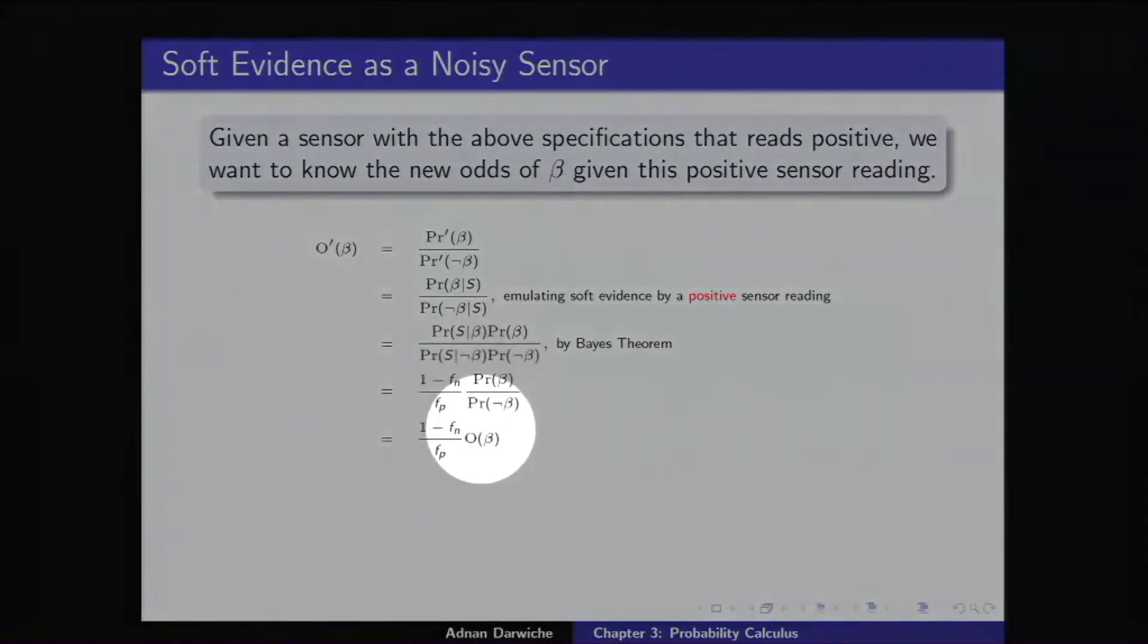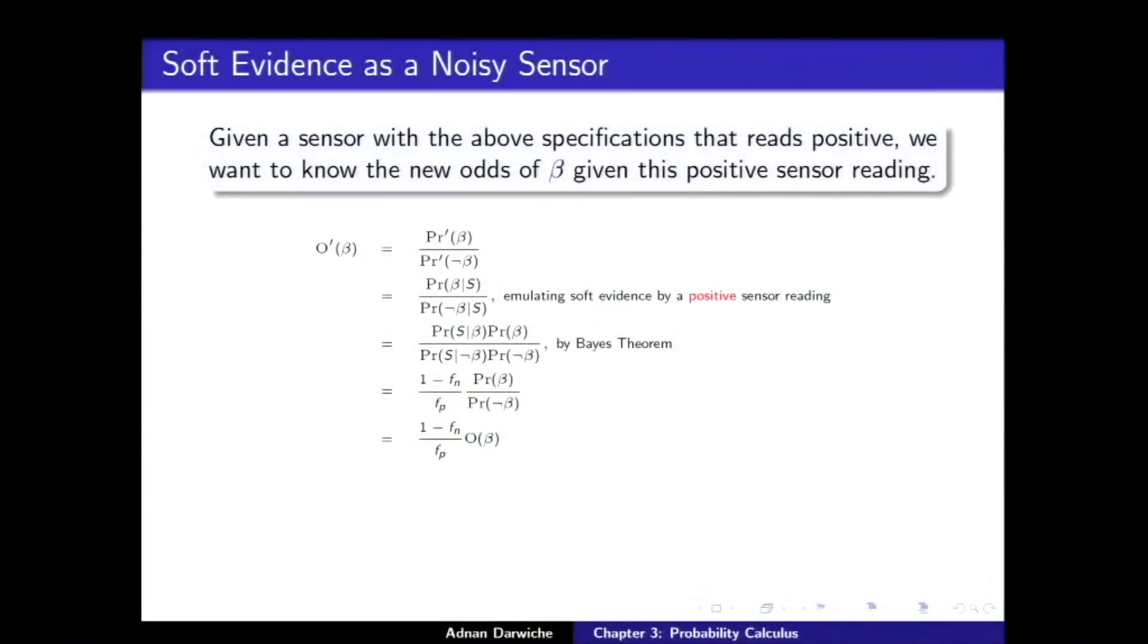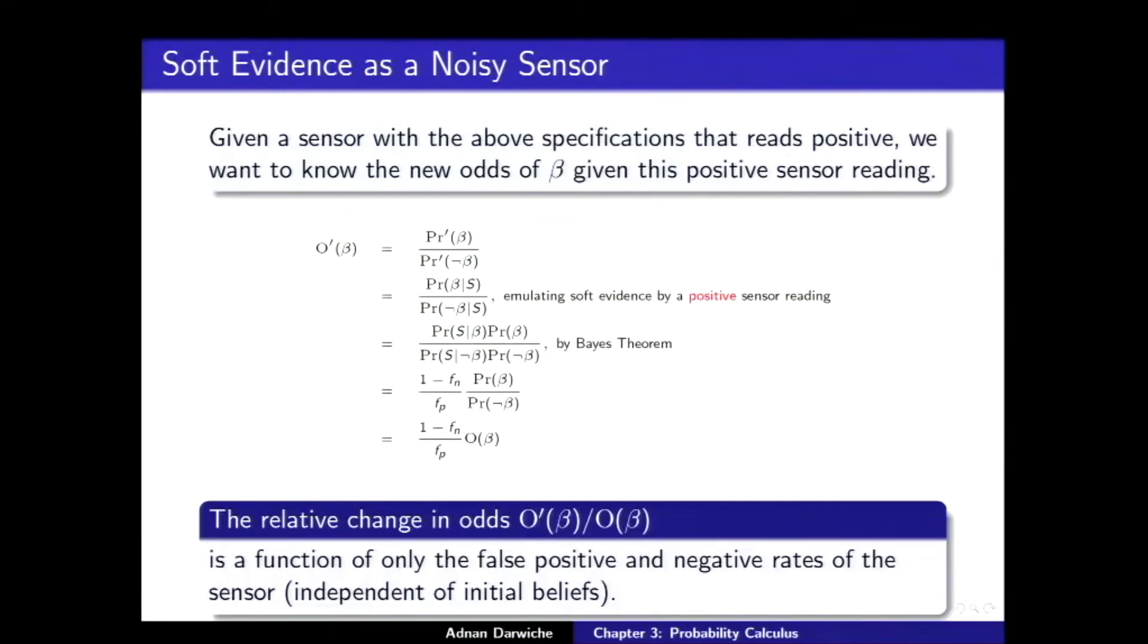What did we do? The new odds on beta, old odds on beta, divide them, what do you get? That's the Bayes factor, is a function of only the false positive and false negative rates of the sensors, local properties. And, here's what we have. The relative change in odds is a function of only the false positive and negative rates of the sensor independently of initial beliefs.